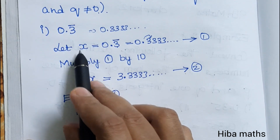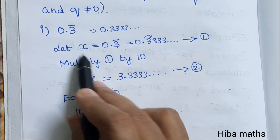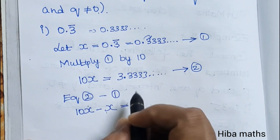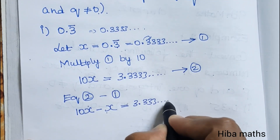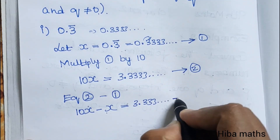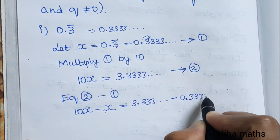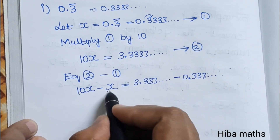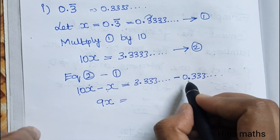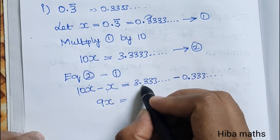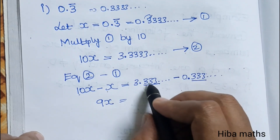Now subtract equation 1 from equation 2. Left hand side: 10x minus x equals 9x. Right hand side: 3.33333 minus 0.33333. So 9x equals 3.